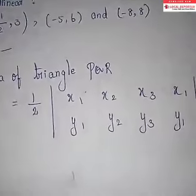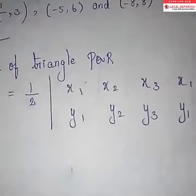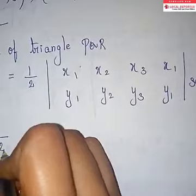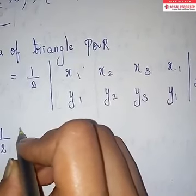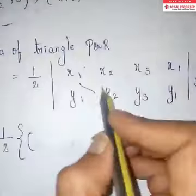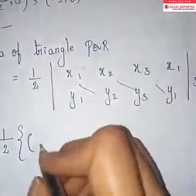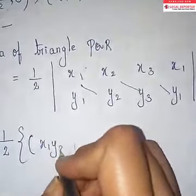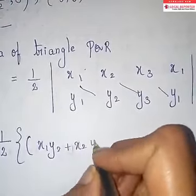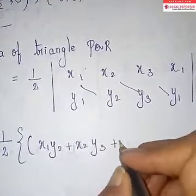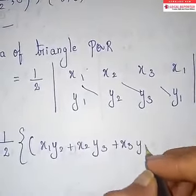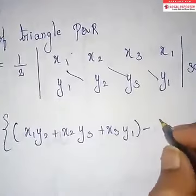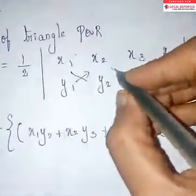So next one is arrow mark. And then we start the formula. This is the formula. x1, y2, x2, y3, x3, y1. Complete the formula. Now we start the formula. Let's go to the table.